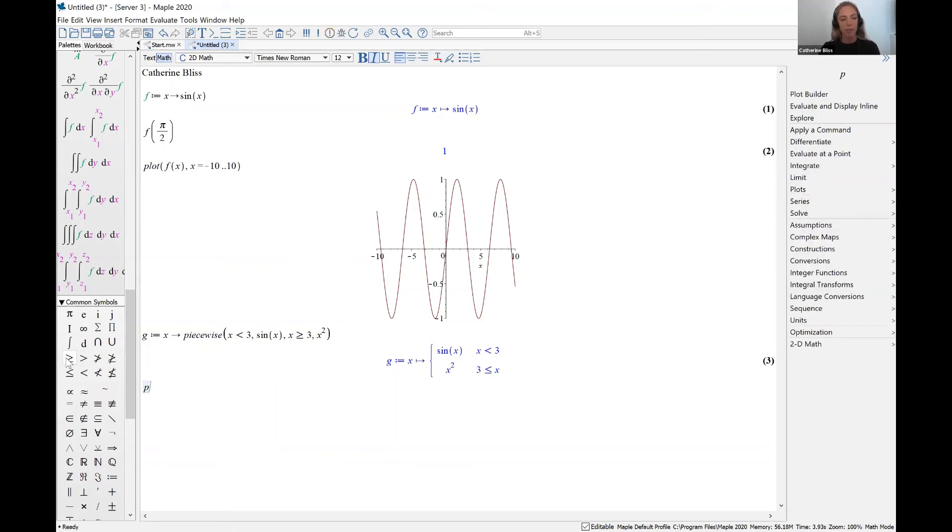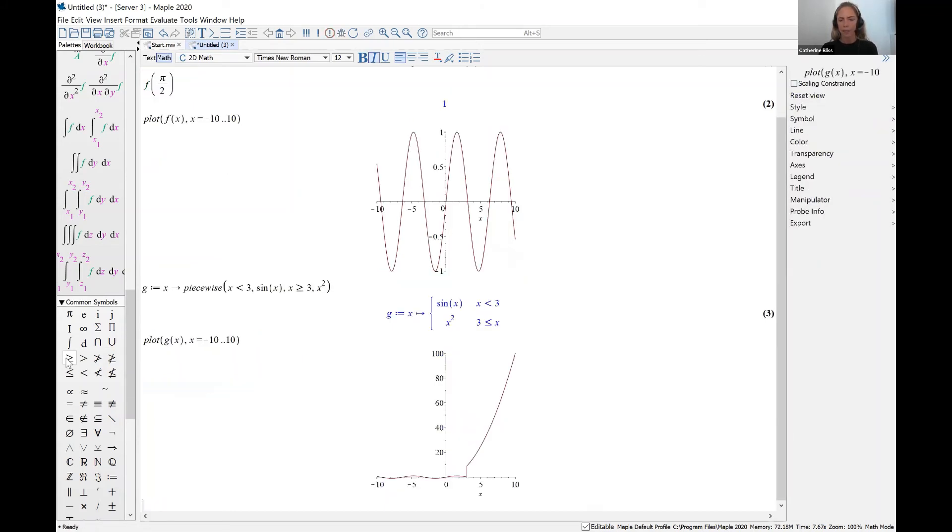Let's plot the piecewise function. And we'll do that as x goes from negative 10 up to 10. Now, this looks quite strange. To improve this graph, we could reduce the domain from negative 10 to 5.